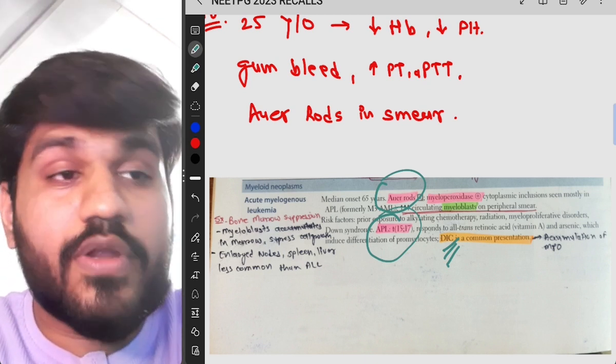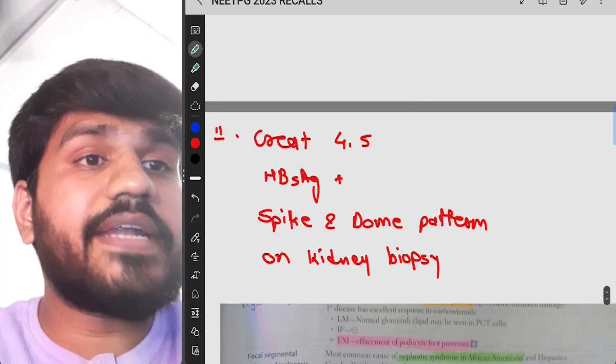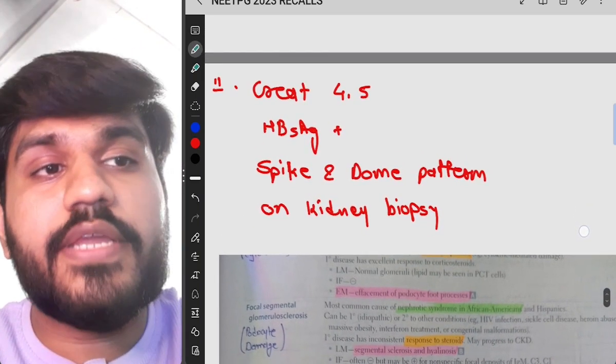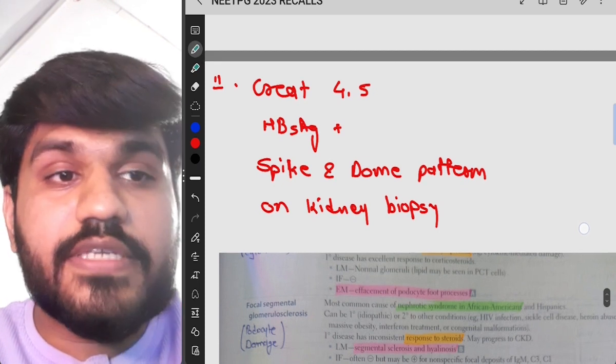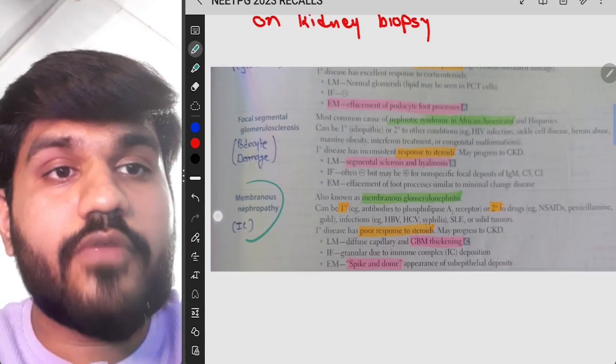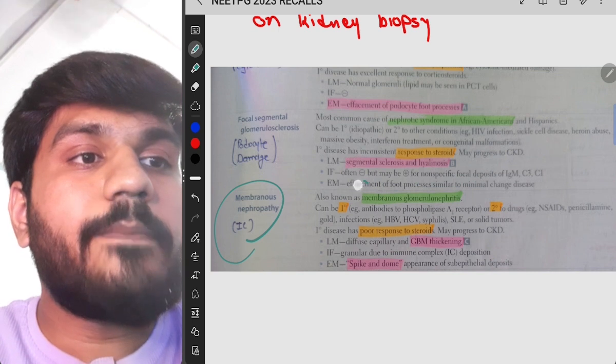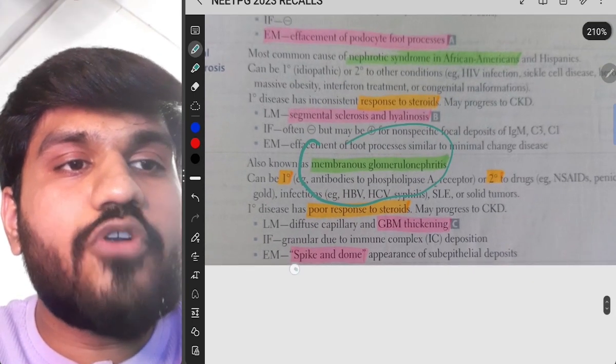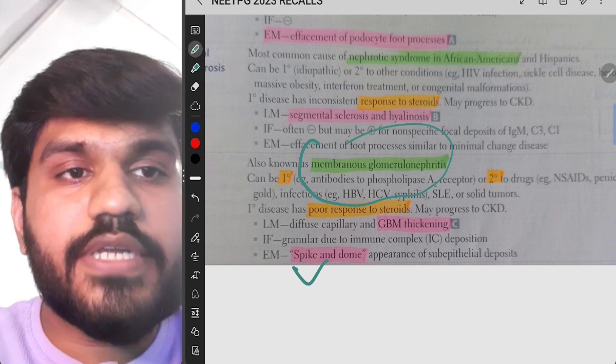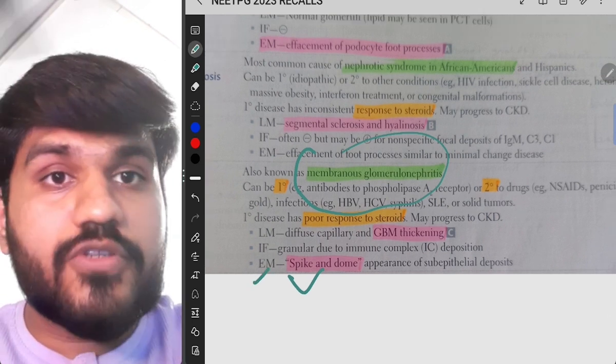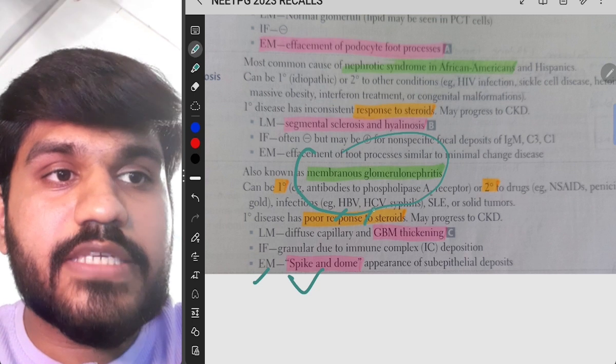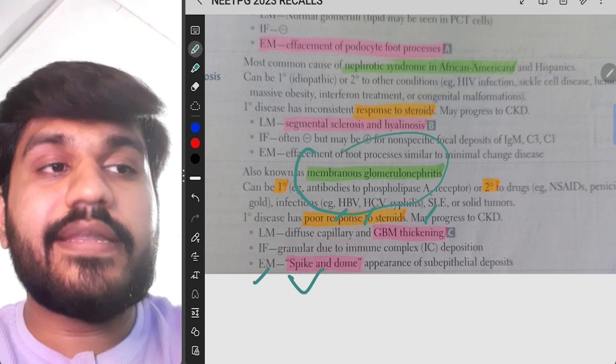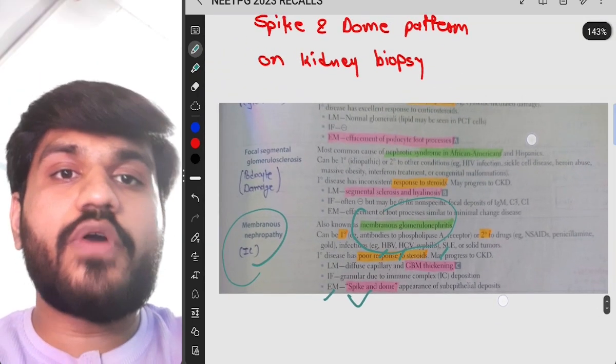Next question is creatinine is 4.5, HBsAg positive, spike and dome pattern on kidney biopsy. So which is this? Obviously this is our membranous nephropathy or in other words membranous glomerulonephritis. Also written that spike and dome shape appearance of the subepithelial deposit in electron microscopy and also written that HBV and HCV infections patient and who have SLE are more prone to get this disease.